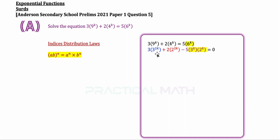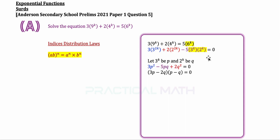We now have a base of 3, a base of 2, and bases of 3 and 2 on the respective sides. It still looks pretty complicated, so let's simplify further by doing some substitution. Changing 3 to the power of k to be p means 3 to the power of 2k is p squared. Changing 2 to the power of k to be q means 2 to the power of 2k is q squared. The remaining term in purple becomes negative 5p cubed.